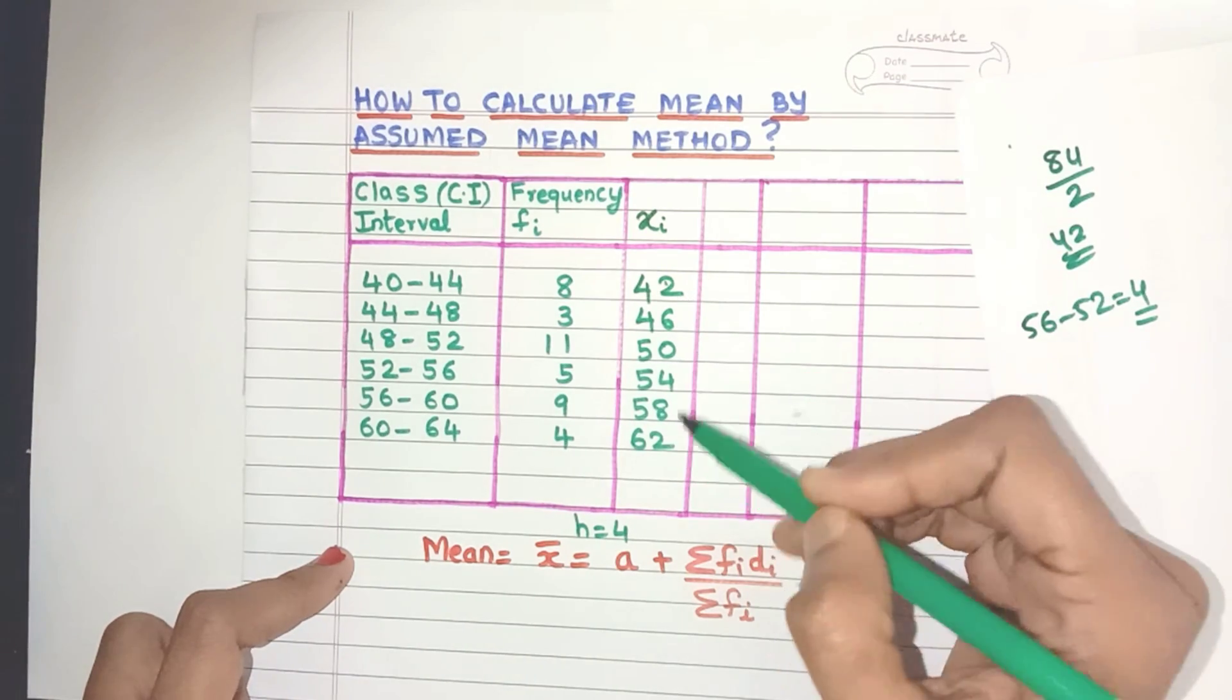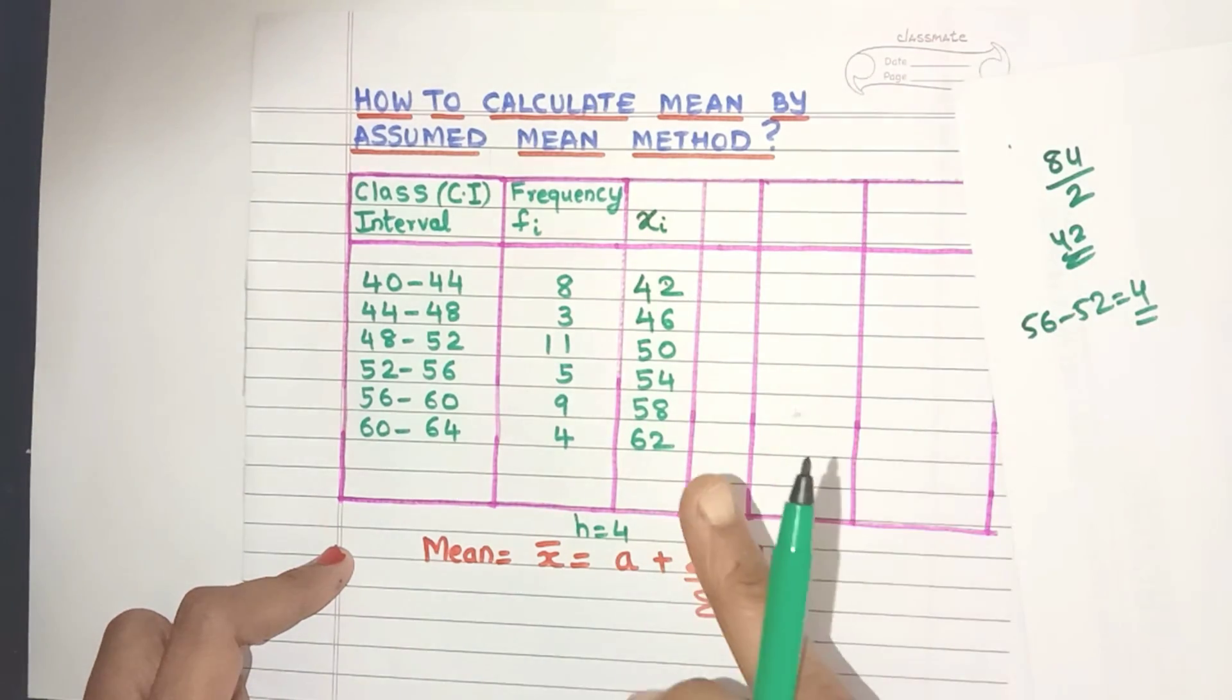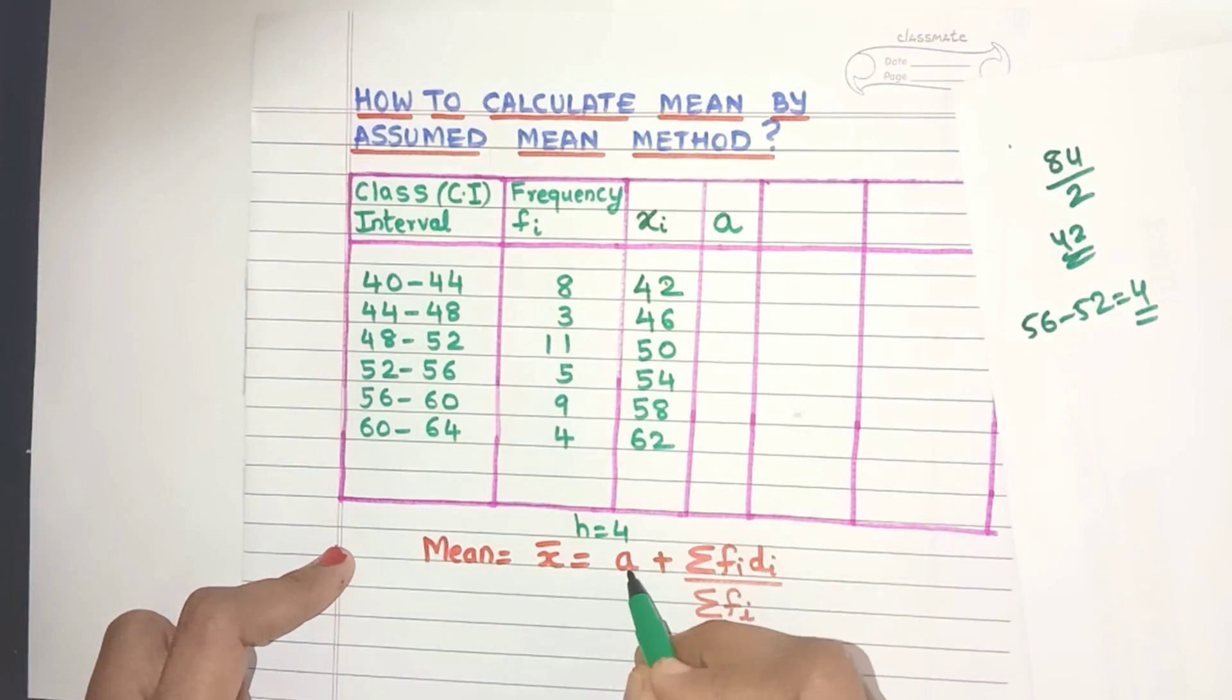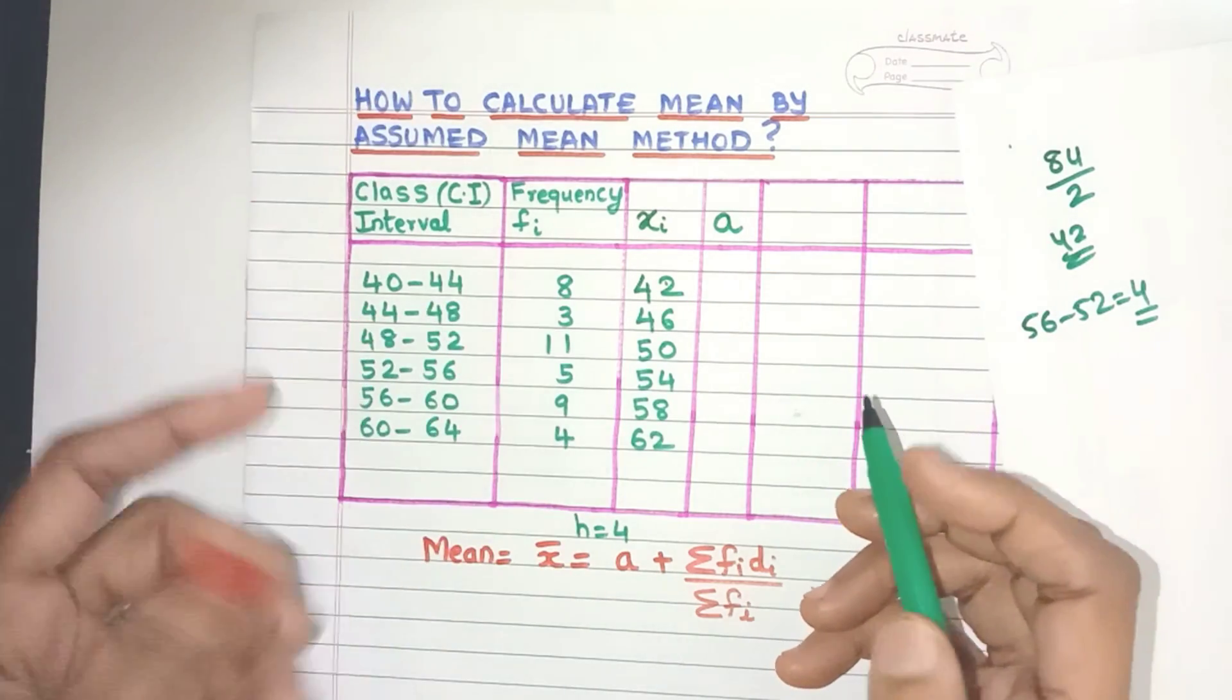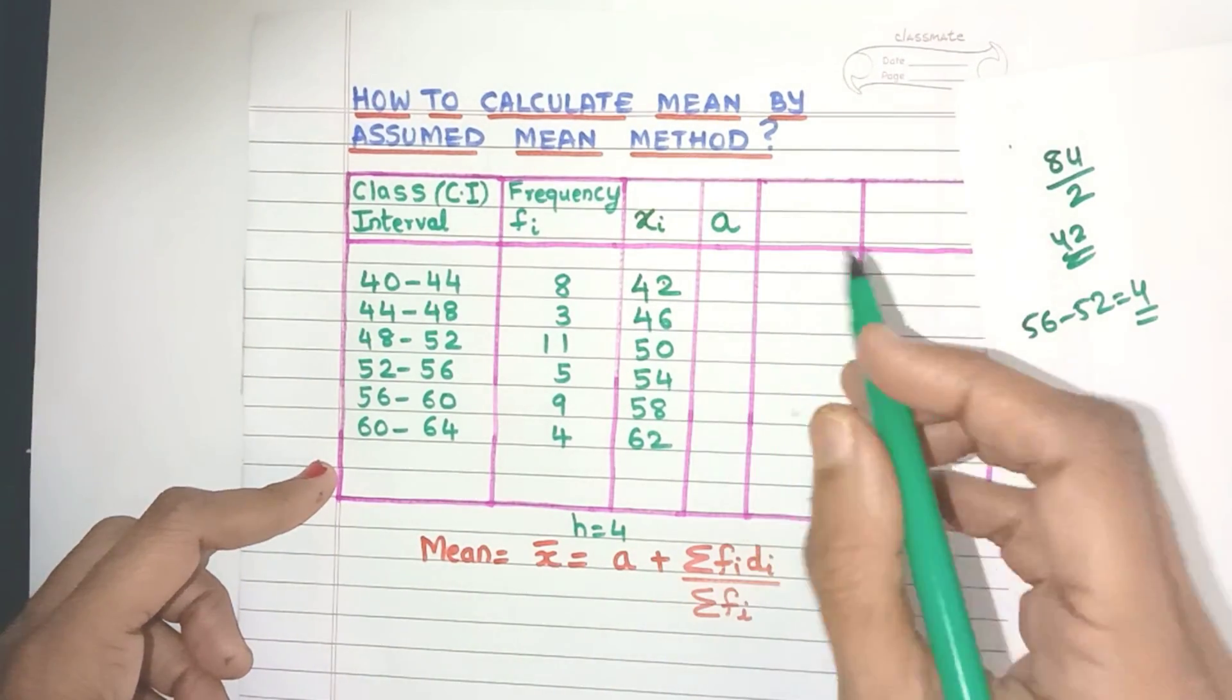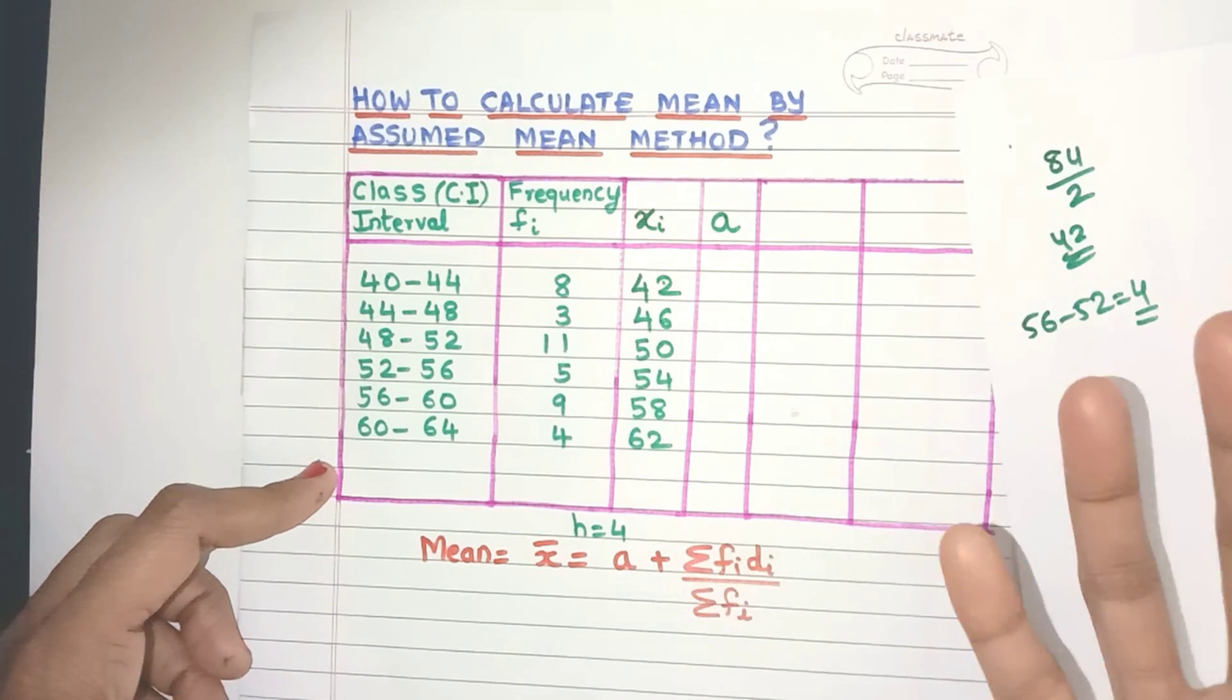Now did you notice that the xi values are quite big. So first let's reduce them by the assumed mean method. So that is our next column, that is the A value which is nothing but assumed mean. So how do you find that out? Any xi value friends, you can choose it to be your assumed mean.